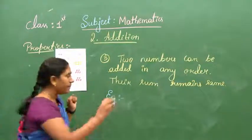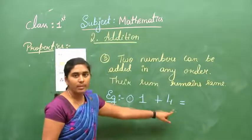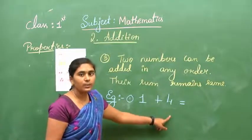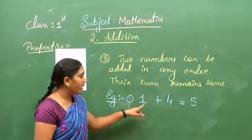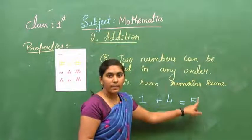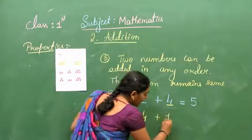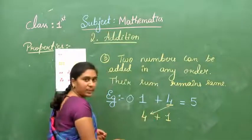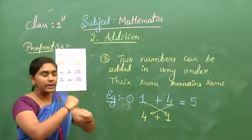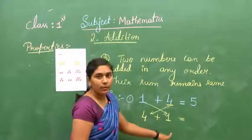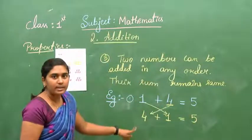Let me give you one more example: 1 plus 4. What is the answer for 1 plus 4? The answer is 5. 1 plus 4 is 5. Now what I will do? I will change these places — I will write 4 in the first place and 1 in the second place. 4 plus 1 — now also the answer is 5. Now also the answer is 5.